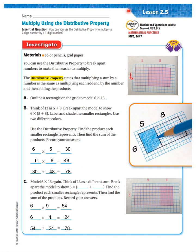Let's begin Lesson 2.5, Multiply using the distributive property. How can you use the distributive property to multiply a two digit number by a one digit number? You can use the distributive property to break apart numbers to make them easier to multiply. The distributive property states that multiplying a sum by a number is the same as multiplying each addend by the number and then adding the products.